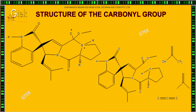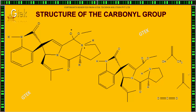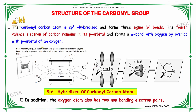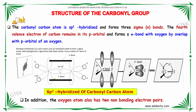We will be discussing the structure of the carbonyl group. The carbonyl carbon atom is sp2 hybridized and forms three sigma bonds — one with each carbon and two hydrogens. The fourth electron of carbon remains in its p orbital and forms a pi bond with the other carbon atom.